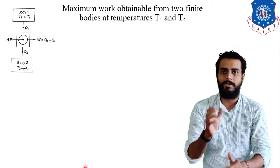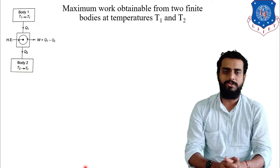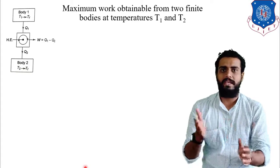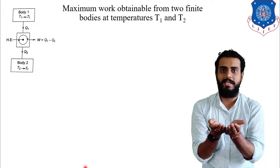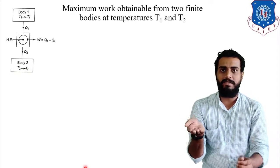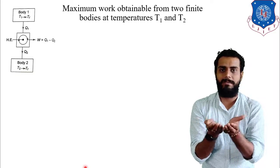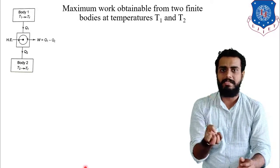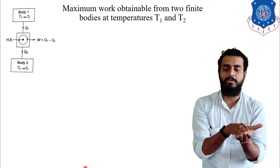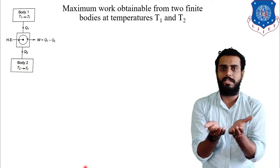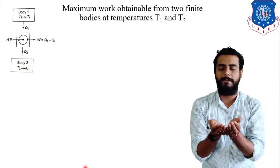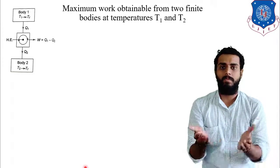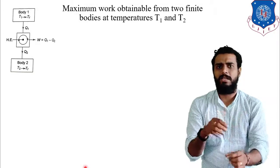For understanding, we will observe the diagram on the screen. Initially we will take two bodies at temperatures T1 and T2. If we put two bodies together in contact, T1 is the higher temperature and T2 is the lower temperature. After a certain time, the T1 body will decrease its temperature, heat will transfer to the T2 body, and T2 will increase. Both bodies will attain an intermediate temperature known as Tf.